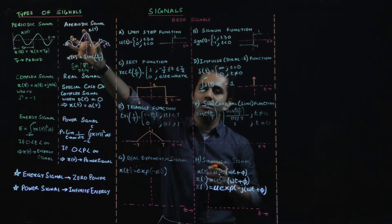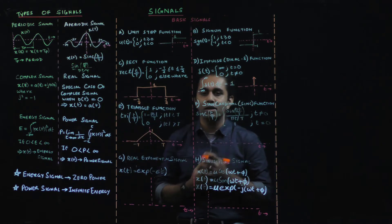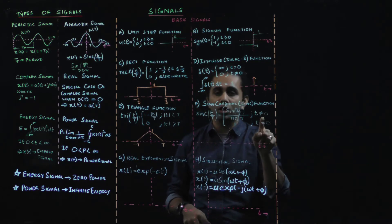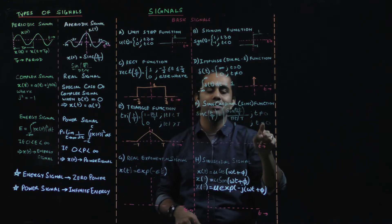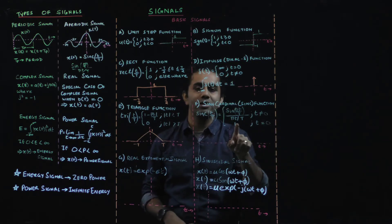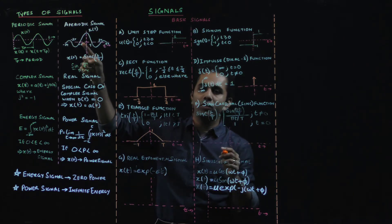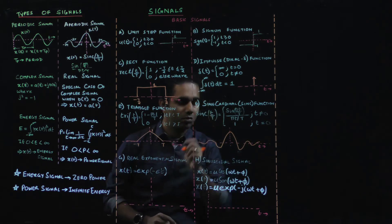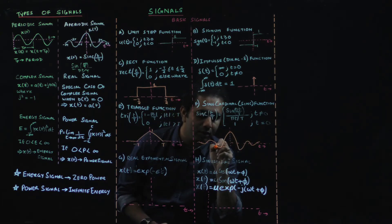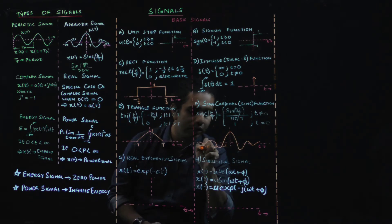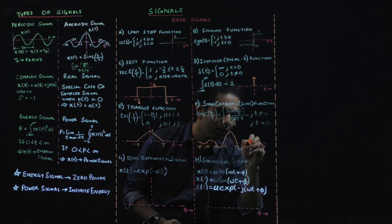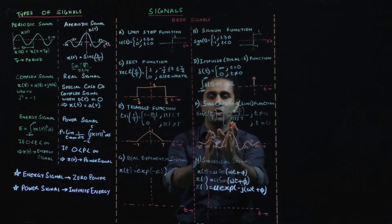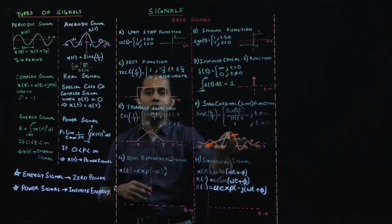Next we look at the sine cardinal function, or sinc function. The sinc function is defined as sin(πt/T) divided by (πt/T) for any value of t not equal to 0, and defined as 1 for t equal to 0. Plotting it gives a symmetrical waveform with zero crossings at minus T, minus 2T, minus 3T, minus 4T on the left and T, 2T, 3T, 4T on the right. Make sure to plot it symmetrically on both sides.